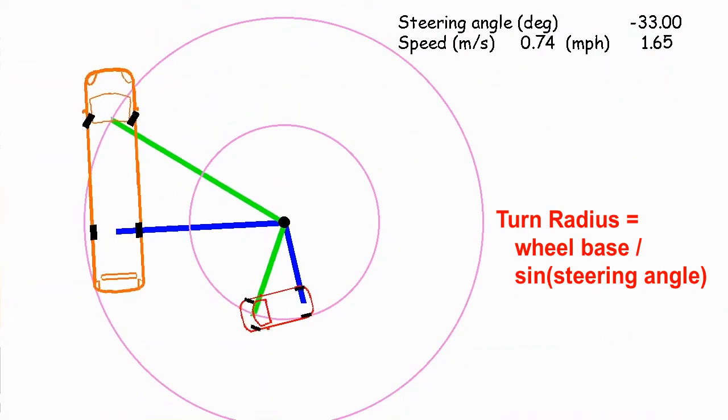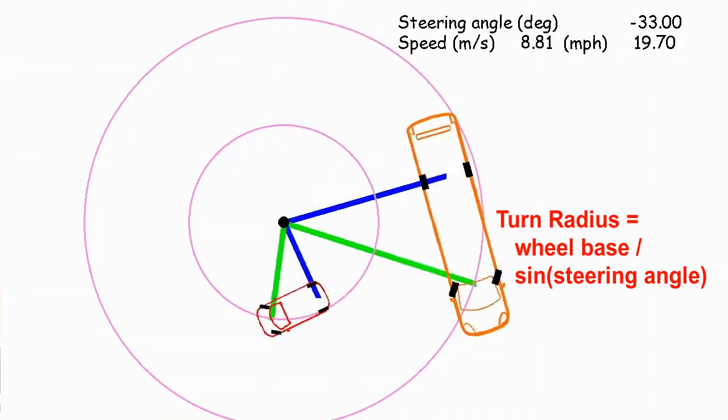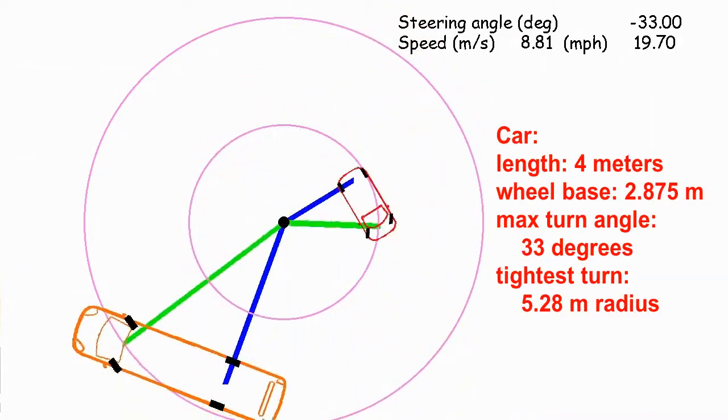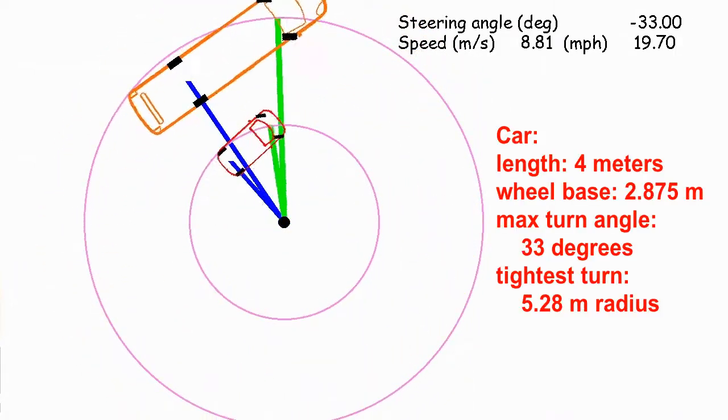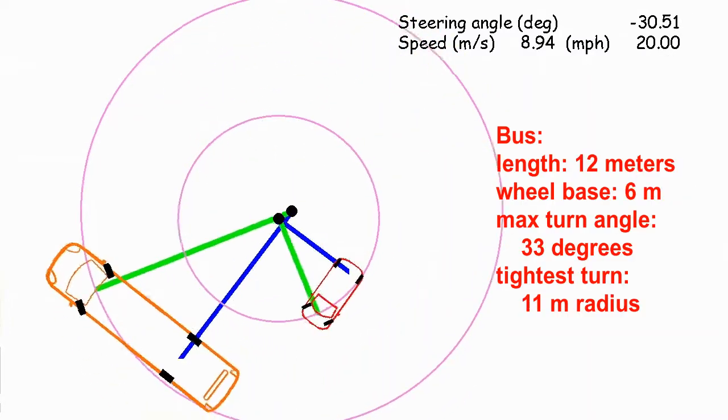Some of the key numbers for Ackermann Steering are the distance between the axles, that's the wheelbase, and as well as the angle that the wheels are turned at. If we turn the wheels less, then the intersection point moves out and the turn radius gets bigger.